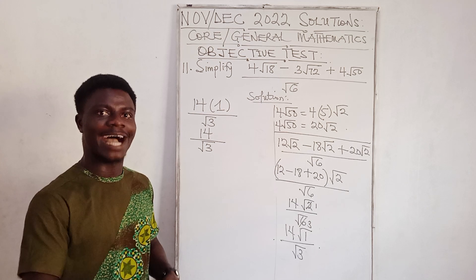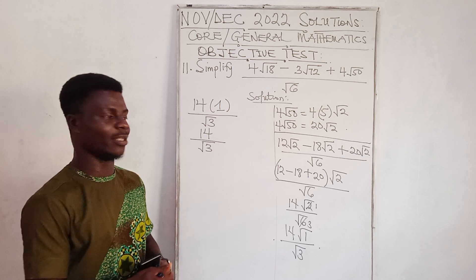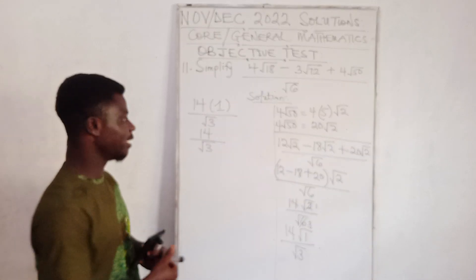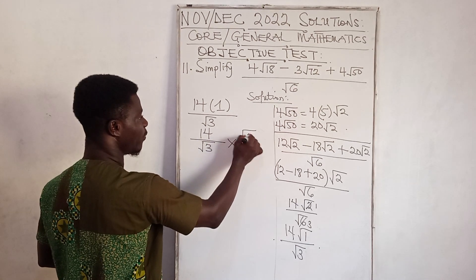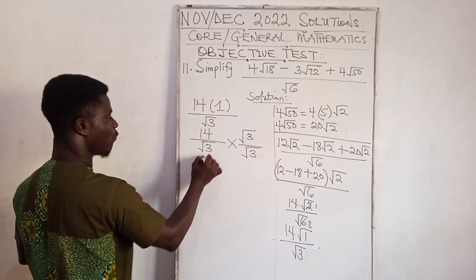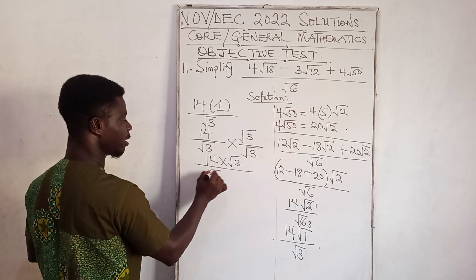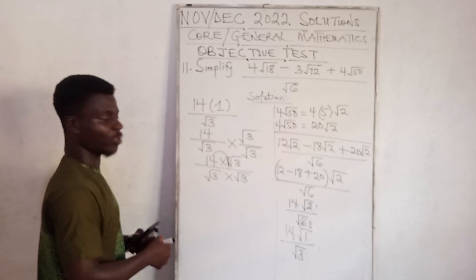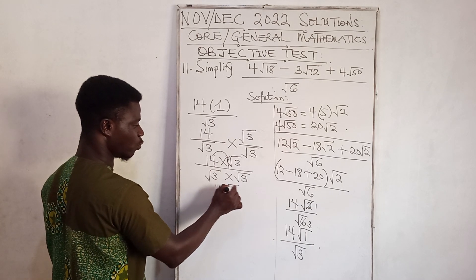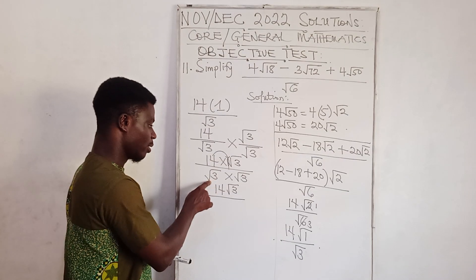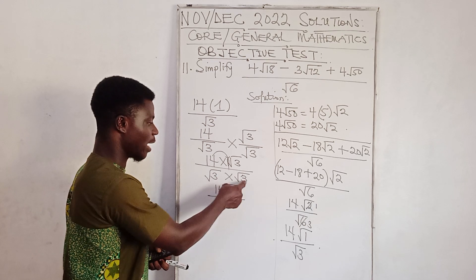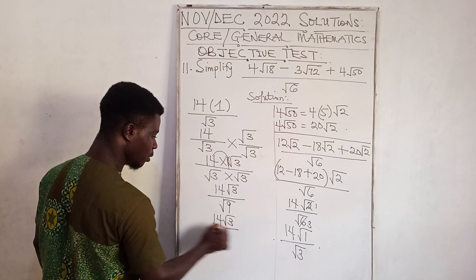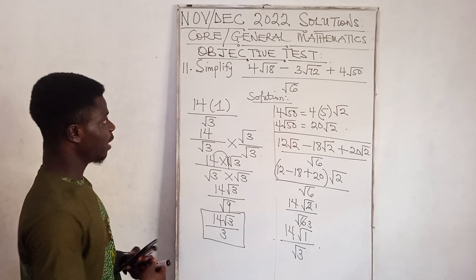To rationalize the denominator, we multiply both numerator and denominator by √3. This gives 14 times √3 divided by √3 times √3. Since 14 is not inside a square root it multiplies the coefficient, giving 14√3. In the denominator, √3 times √3 gives √9, and √9 equals 3.